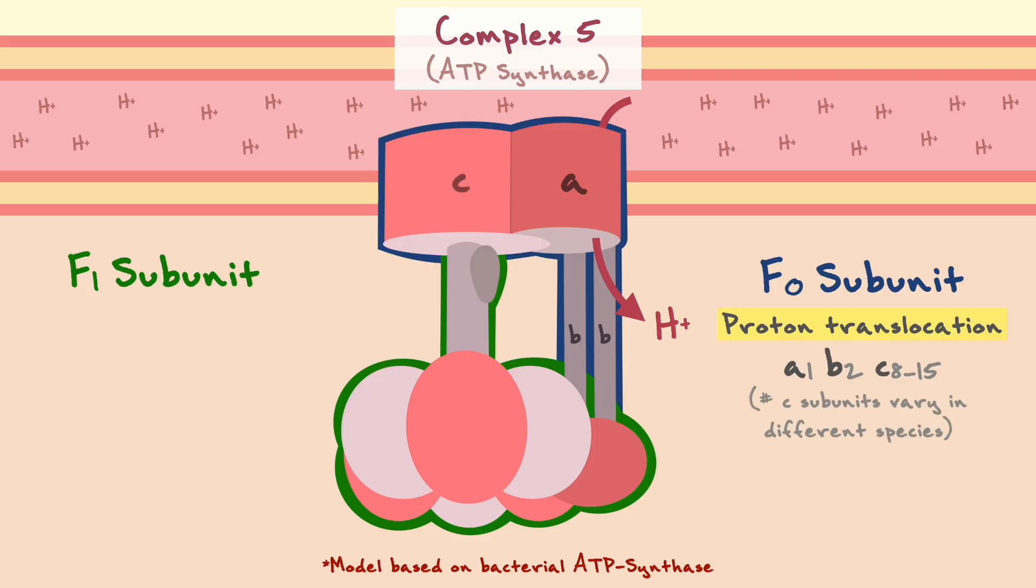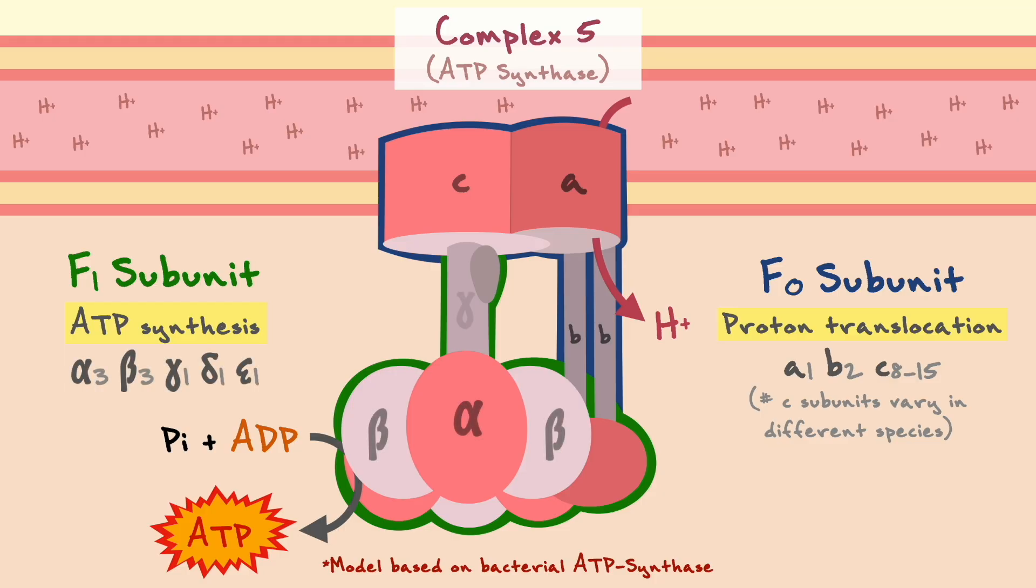In this illustration, the many C subunits are not indicated but we will see shortly how they distribute in this protein. As for the F1 subunit, it is responsible for synthesizing ATP and it is made out of three alpha, three beta, one gamma, one delta and one epsilon subunit.